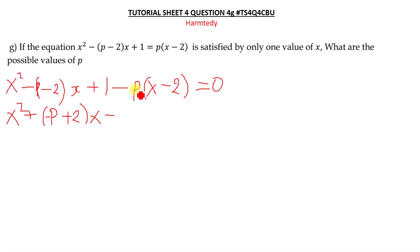When we multiply the negative throughout the brackets and then x, then we say minus, when you multiply negative p plus x, we get negative px. Then we say plus 1, negative p times negative 2, we have plus 1 and then plus 2p. This is equal to 0.